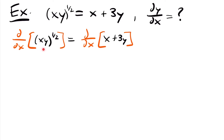So if I take the derivative with respect to x of both sides, we will have d/dx of xy to the 1/2 power equal to d/dx of x plus 3y. On the left side we're going to have a chain rule and a product rule. We have an outer function of this quantity to the 1/2 power and the inner function x times y. We'll start by taking the derivative of the outside function: 1/2 times xy to the power of 1/2 minus 1.